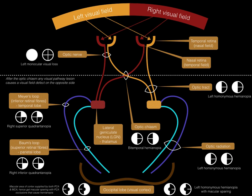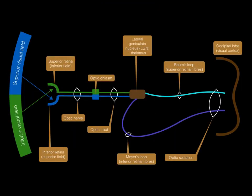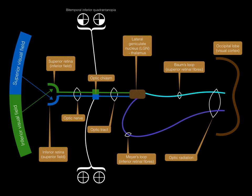We have two last visual field defects to discuss, which require a return to the sagittal view. If there is a lesion affecting the superior aspect of the optic chiasm, what visual field defect would you expect? A bitemporal inferior quadrantanopia. What about a lesion affecting the inferior aspect of the optic chiasm? A bitemporal superior quadrantanopia.